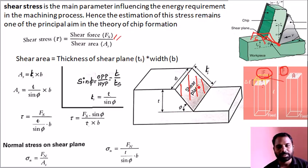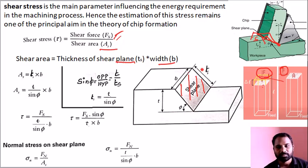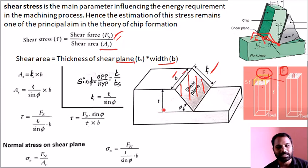Now we know the shear force. The shear area is the thickness of the shear plane multiplied by the width — width times Ts, or Ts times B. In Ts, we know the uncut chip thickness T and Tc.